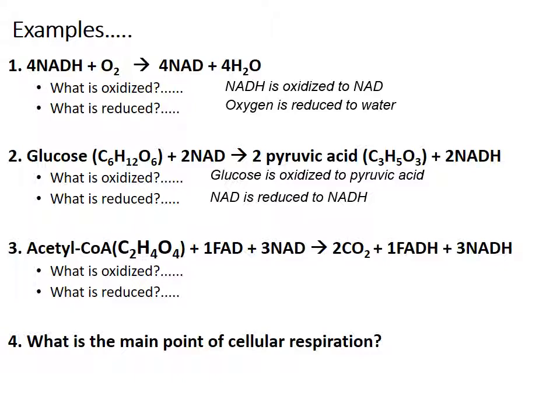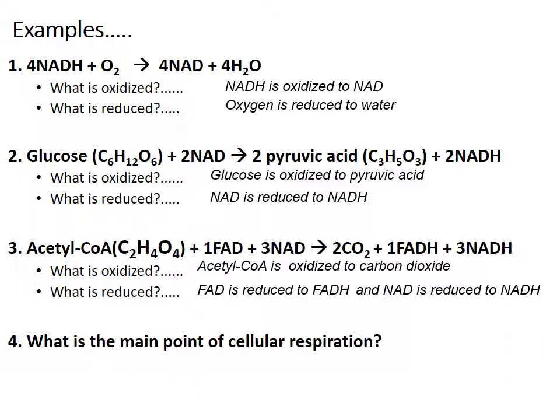In the next equation, acetyl coenzyme A (C₂H₄O₄) plus 1 FAD and 3 NAD yields 2 carbon dioxide, 1 FADH, and 3 NADH. Acetyl coenzyme A is oxidized to carbon dioxide, FAD is reduced to FADH, and NAD is reduced to NADH — so FADH and NADH are reduced coenzymes. The big picture behind cellular respiration is that it releases energy from organic molecules and allows us to use that energy to produce ATP.